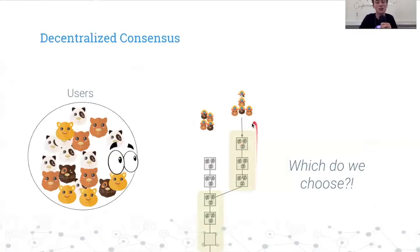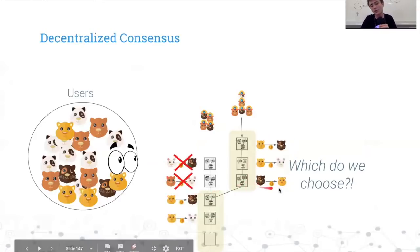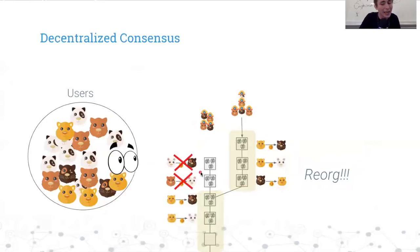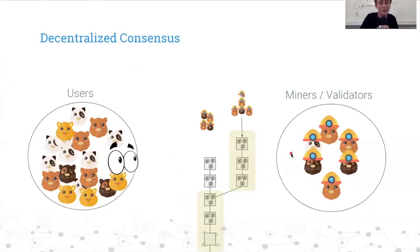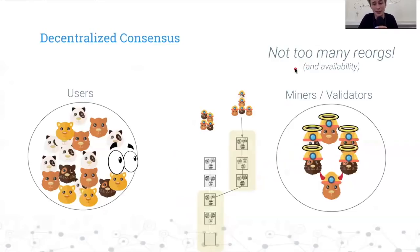This fork eventually grows larger than the previous one. Which do we choose? Now we actually have to choose this new fork. What does that mean? These two transactions from before are now not going to be included. Instead, we're going to choose these transactions where the brown sends to the gold instead of the red sending to the white. That's called a reorg. Reorgs are not too fun because this group of users doesn't want to see their transactions no longer be a part of history. Thankfully, with an honest majority assumption, these reorgs are not very frequent. We find that these chains build up a single longest chain, and that history doesn't change very much.